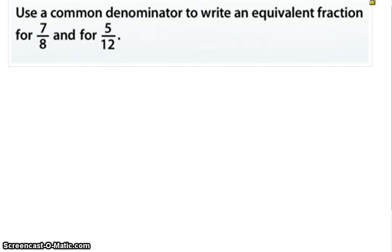So the first way we'll look, or first we'll read the question here. It says, use a common denominator to write an equivalent fraction for 7 eighths and for 5 twelfths. So the first way that a lot of people seem to like, which maybe for some people is the easiest way...